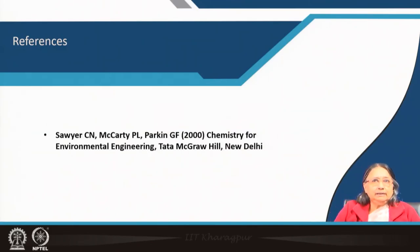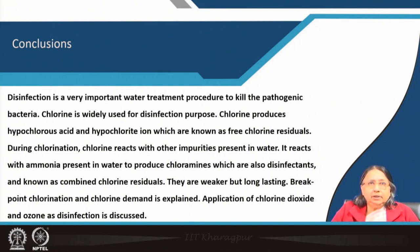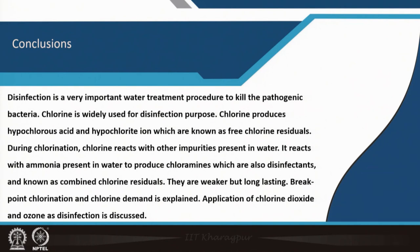As a reference, Sauer-McCarty is a very nicely written book. In conclusion: disinfection is a very important water treatment procedure to kill pathogenic bacteria. Chlorine is widely used and produces hypochlorous acid and hypochlorite ion — free chlorine residuals. During chlorination, chlorine reacts with ammonia to produce chloramines (combined chlorine residuals) — weaker but long-lasting disinfectants. Breakpoint chlorination and chlorine demand were explained. Application of chlorine dioxide and ozone as disinfectants was also covered. Thank you very much.